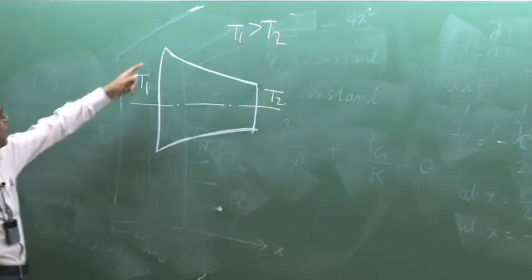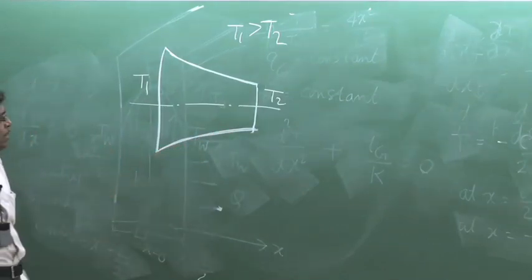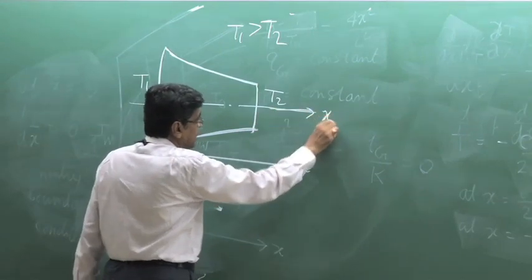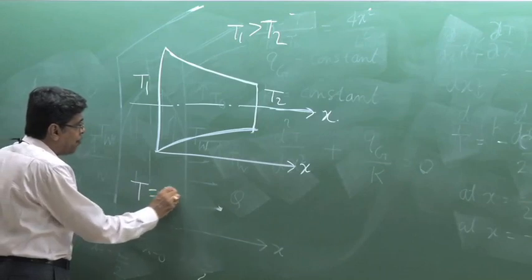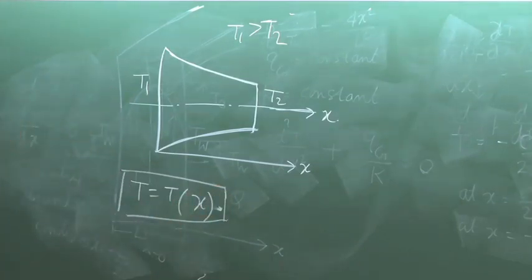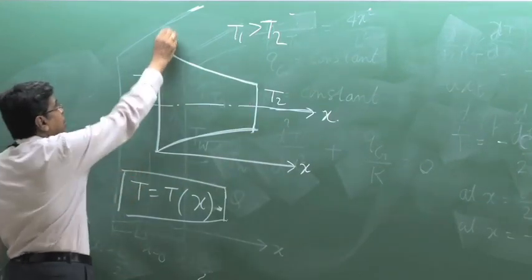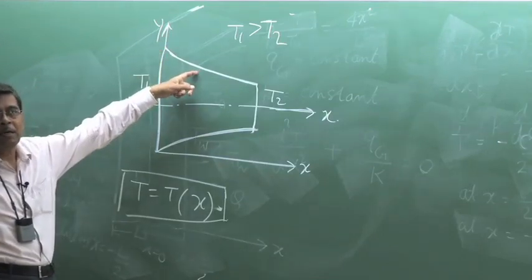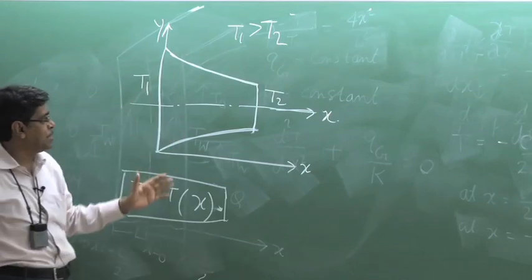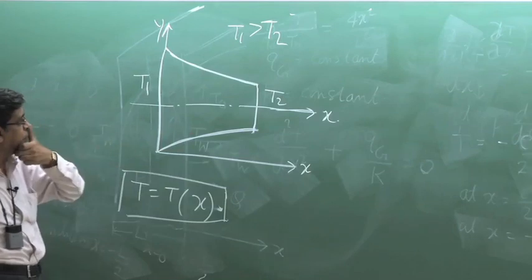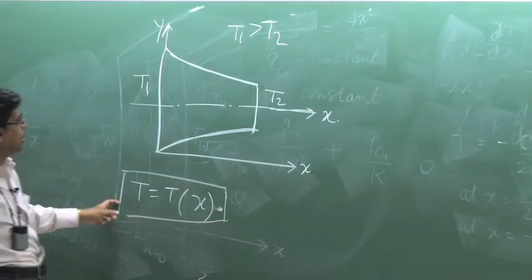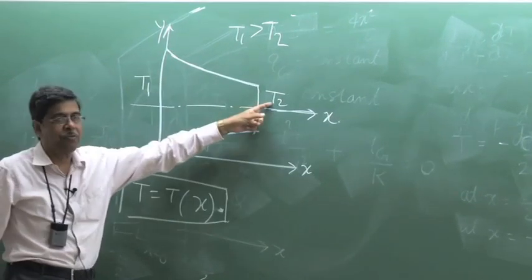Sometimes the problem is specified by insulating the lateral surfaces. If x is in this direction along the middle axis, then we say T is a function of x, and sometimes we take this problem as a one-dimensional problem. When the area varies in the direction of heat flow, in fact T becomes also a function of y. But if the area variation is not much, or the boundary conditions allow us to neglect variation in the y direction — that is, cross-sectional variation — we can consider almost uniform temperature, as we did for a plane wall, making T only a function of x, where heat flows due to the potential difference T1 and T2.